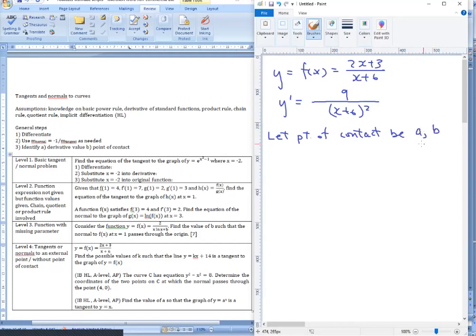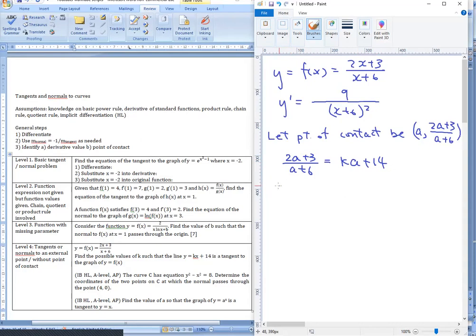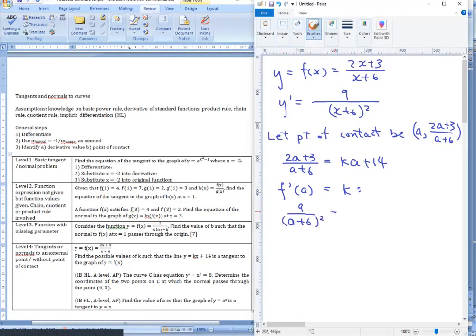We don't know the point of contact so we can let the point of contact be a comma b. And in this case because we are working with a function, we know that b can be written in terms of a, which is going to be 2a plus 3 all over a plus 6. And now that we have this point of contact, we can realize that number one the tangent itself needs to make contact with the graph of f of x. So to make contact we have 2a plus 3 all over a plus 6 equals to kx plus 14 with x replaced by a. We also need to ensure that the tangent would have the same gradient as the derivative at x equals to a.